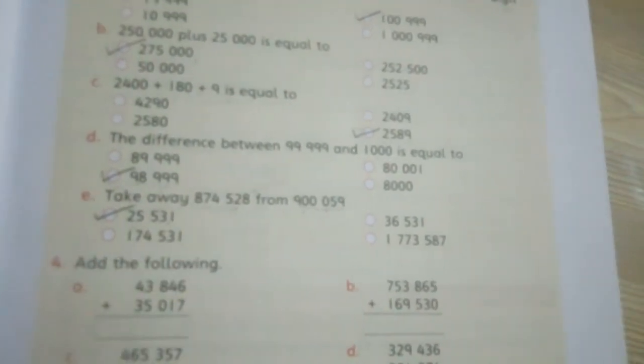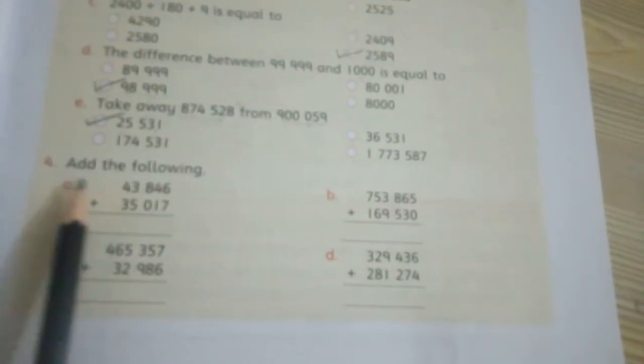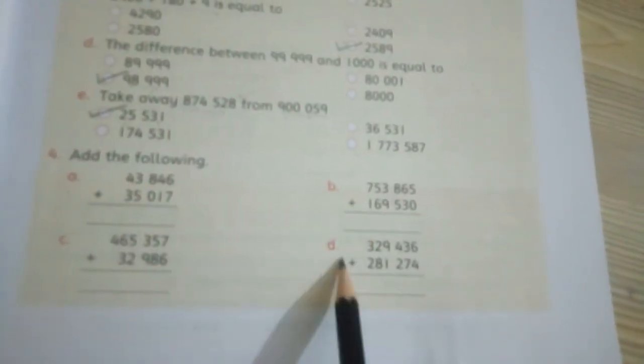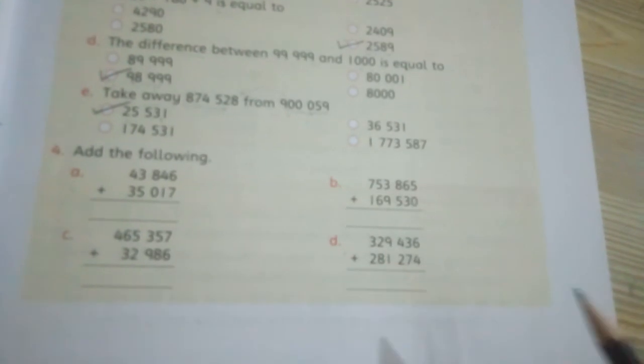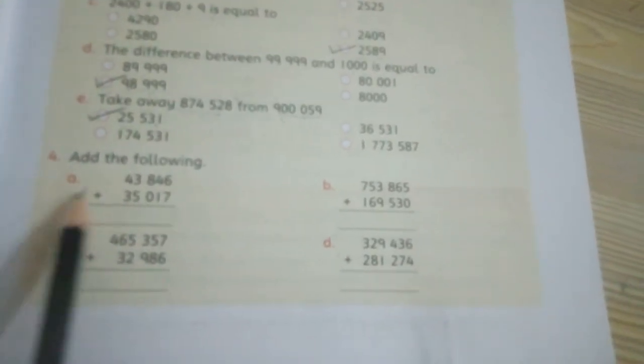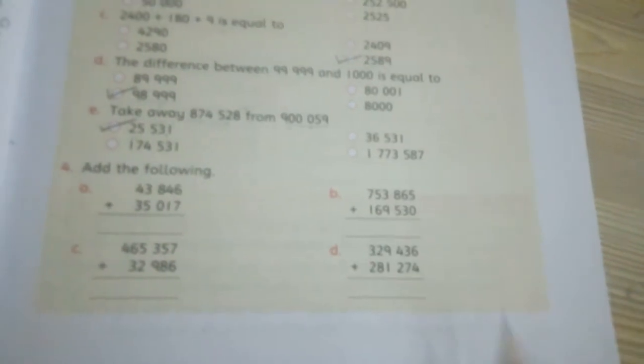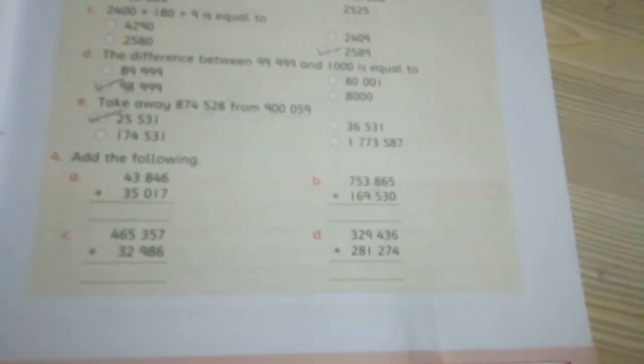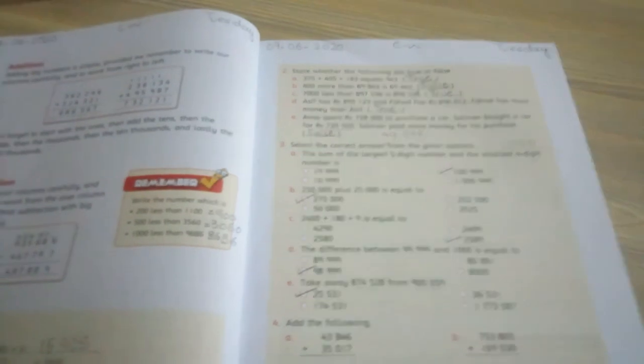Last question: Add the following. These sums are already made for you and you will do addition of these four parts A, B, C, and D. You will do these sums by yourself. We will do the next page, page number 10, tomorrow. Till then, Allah Hafiz.